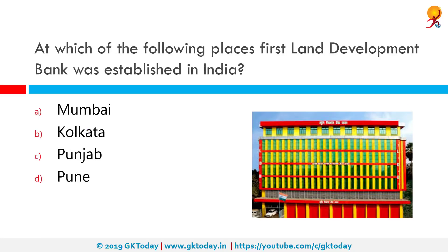At which of the following places was the first land development bank established in India? The correct answer is Punjab. The first land development bank was started at Jhang in Punjab in 1920. They were called land mortgage banks at that time.